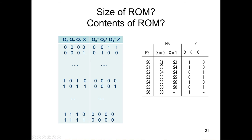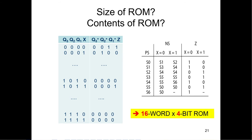For example, for S0 with X=0, the desired next state is 1, so that's 0-0-1 and output Z is 1. For S0 with X=1 before the next clock, the new X comes in and we want to select S2: that's 0-1-0 for D3, D2, D1, and Z output is 0. So basically 16 rows with a four-bit word and four address lines — 16 words by four-bit ROM.